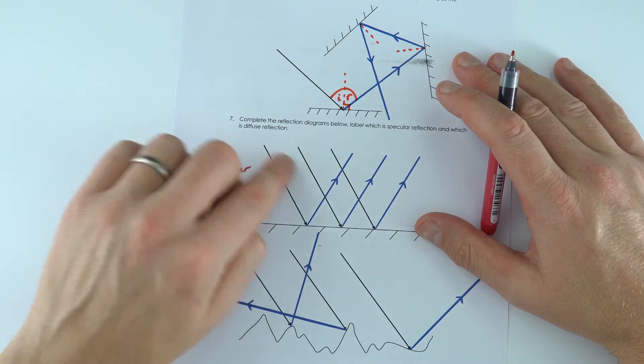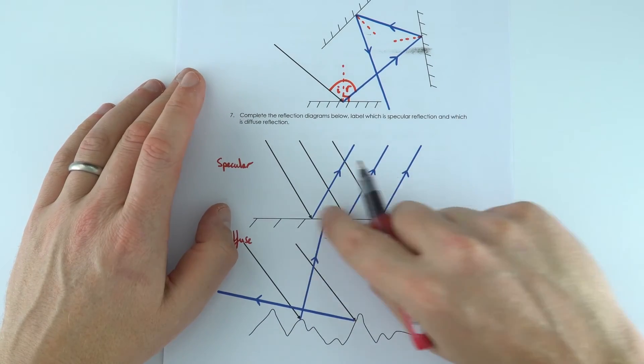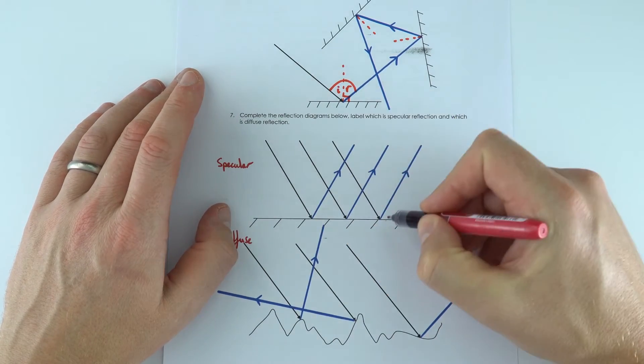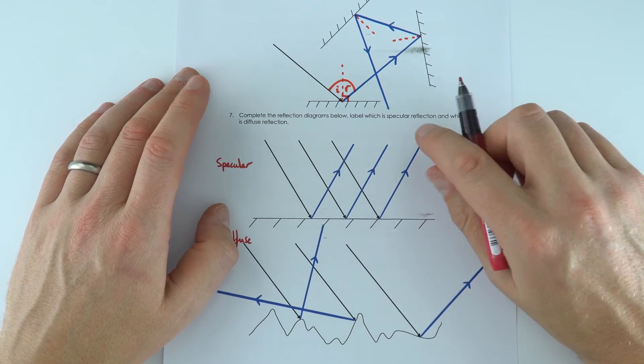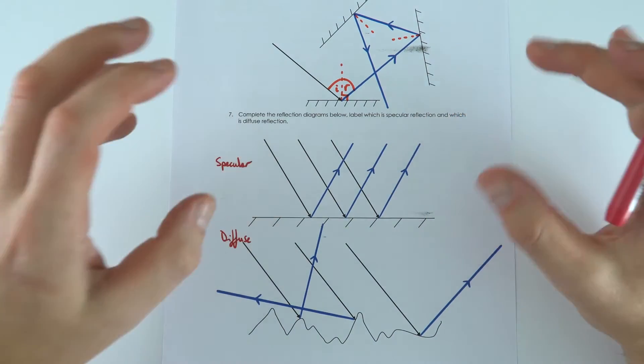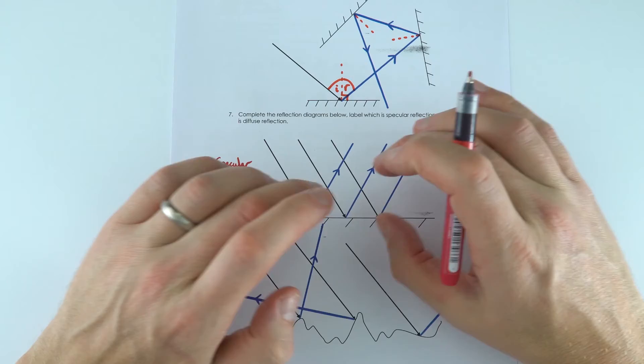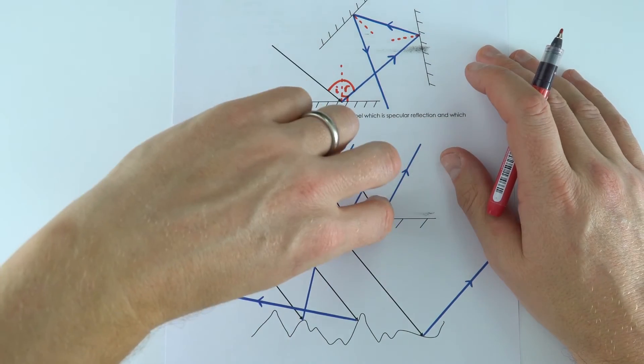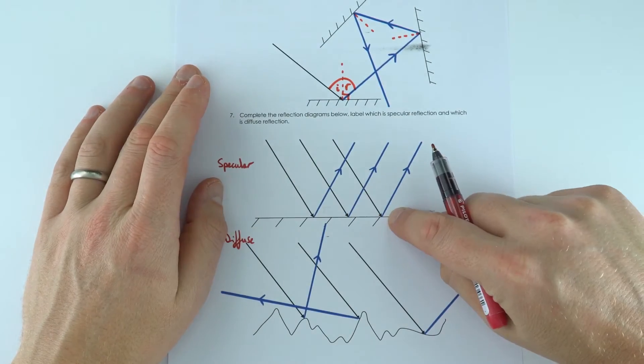Now this one here showed three parallel rays of light, and when they hit the mirror they all bounced off at the same angle and in the same direction. So this is a zoomed-in version of what's happening with specular reflection. Everything comes in and it all bounces off in the same direction from a smooth surface.